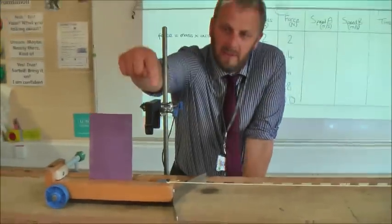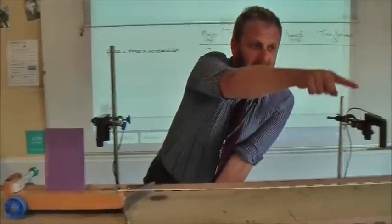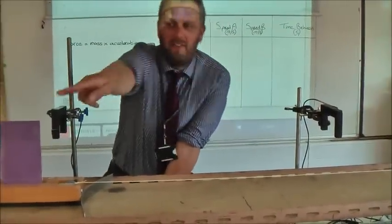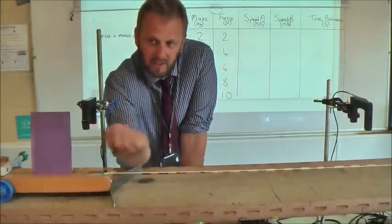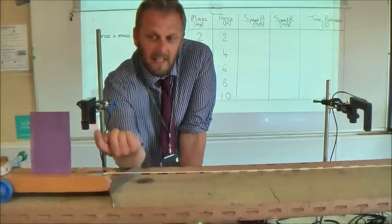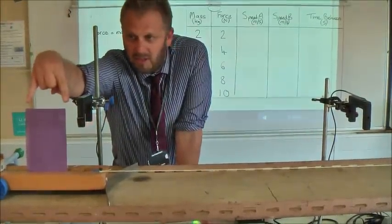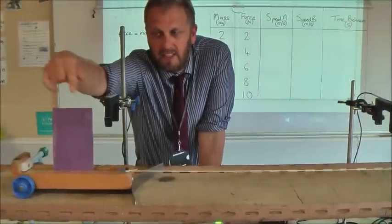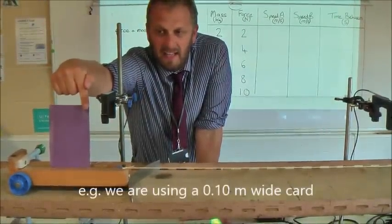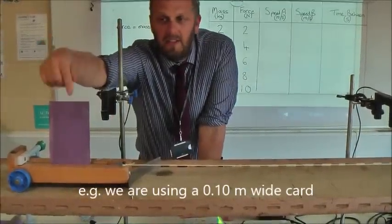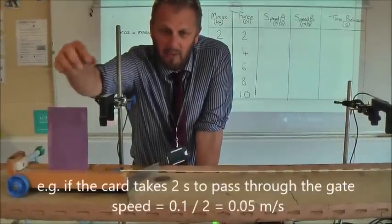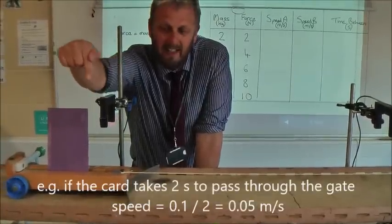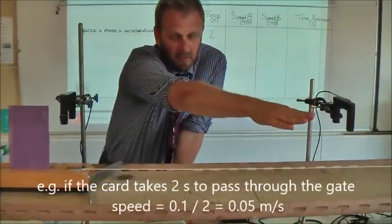Looking at the equipment we've got: we're using light gates. This is the first light gate and this is the second light gate, and these can measure how fast something moves between them. The way they do that is the thing that's moving blocks the light between the two sensors. As it blocks the light, you tell the computer how wide the thing is that's blocking the light, so you give the computer a distance and it knows the time the light is blocked for. Using speed equals distance divided by time, the computer can work out the speed at each gate.